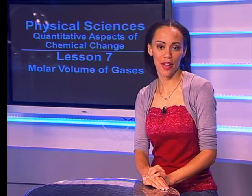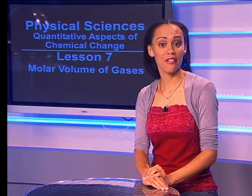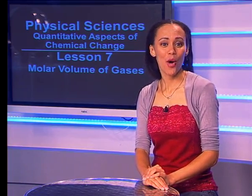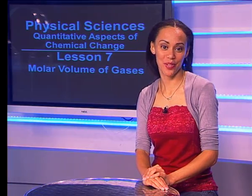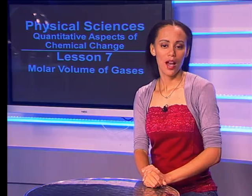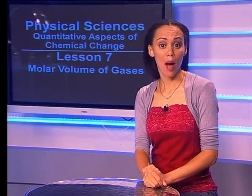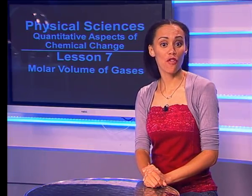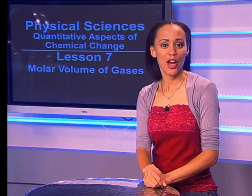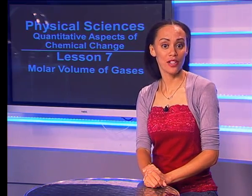Let's do one more example together. In this one we are given the volume of an unknown gas at STP and with the help of calculations we have to identify this gas. 14 grams of an unknown gas occupies a volume of 11.2 cubic decimetres at STP. Make use of calculations to identify this unknown gas. One way that we can identify elements and compounds is by making use of the molar mass of that element or compound. So, if we interpret this question correctly we need to calculate the molar mass of the unknown gas.